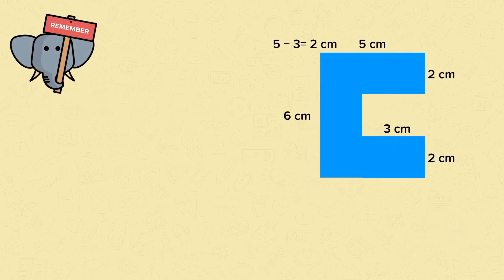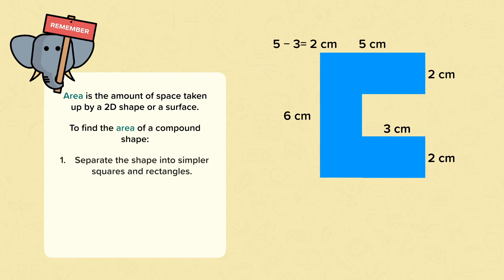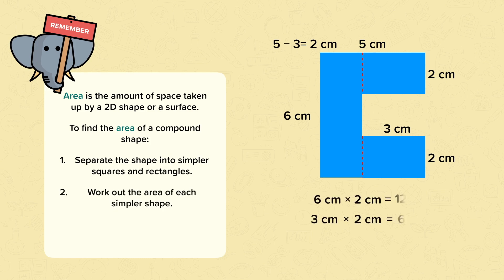Remember, area is the amount of space taken up by a 2D shape or surface. To find the area of a compound shape, separate the shape into smaller squares and rectangles. Work out the area of each simpler shape, and finally add the area of all the shapes together.